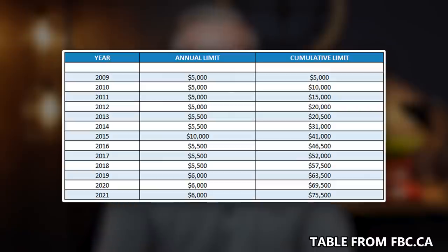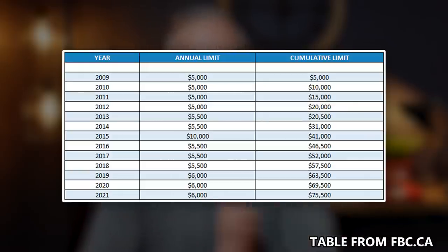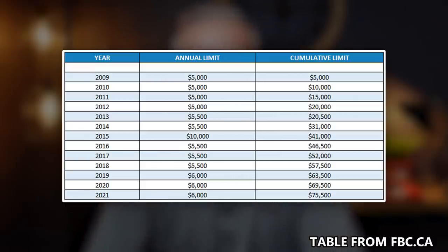Contribution room in 2021 is $75,500, as long as you've been in Canada since 2009 and were at least 18 years of age in 2009. If you weren't 18, you have to wait until whatever year you turn 18. We'll put the contribution limits on the screen. Also, if you live in BC and a couple of other provinces, you can't actually open a TFSA until you're 19, but you earn the contribution room from when you're 18. In Ontario and most provinces, you can open a TFSA when you're 18.